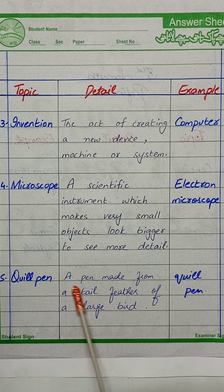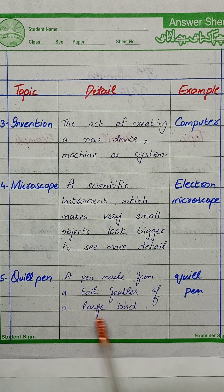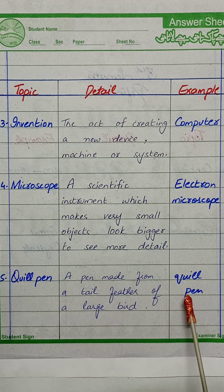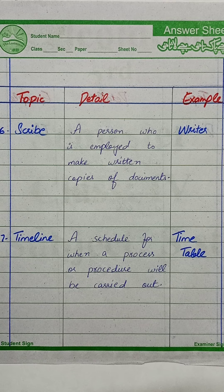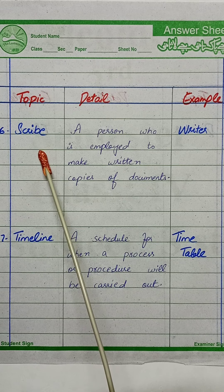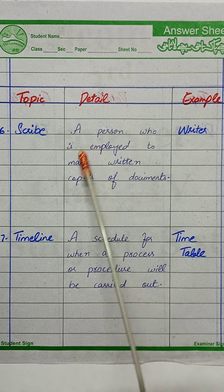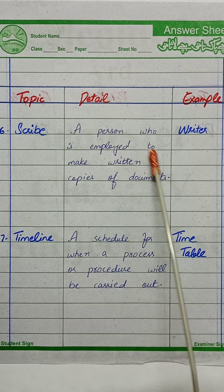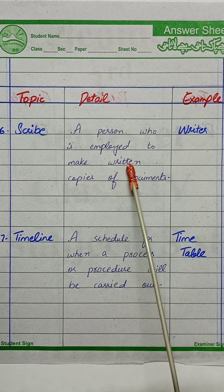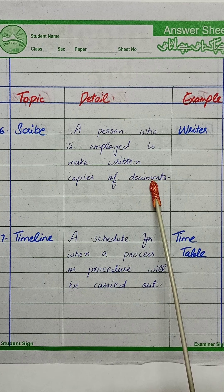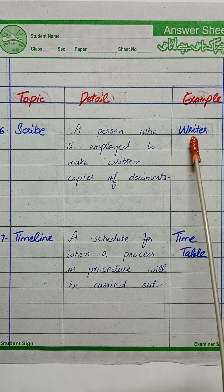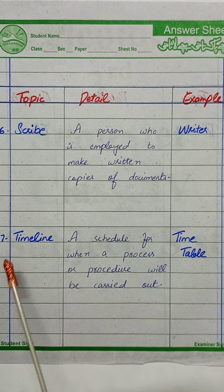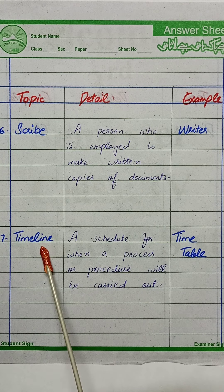Our fifth word is quill pen. The detail is a pen made from a tail feather of a large bird. Example: quill pen. Sixth word is scribe — a person who is employed to make written copies of documents. Example is writer.